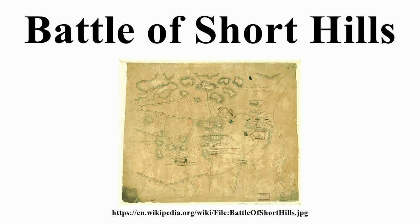The Battle of Short Hills was a conflict between a Continental Army force commanded by Brigadier General William Alexander and an opposing British force commanded by Lieutenant General William Howe. The battle took place on June 26, 1777, at Scotch Plains and Metuchen, New Jersey, during the American Revolutionary War.